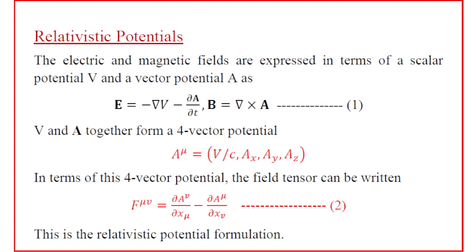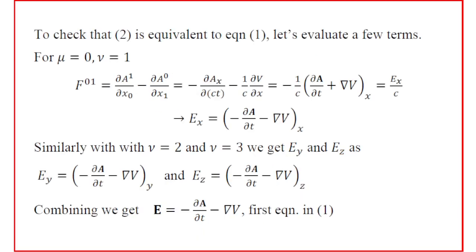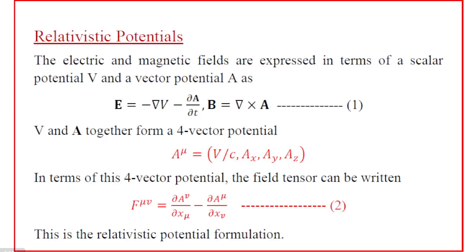The equation can be written as equation 2, the relativistic potential formulation: F^μν = ∂A^ν/∂x^μ − ∂A^μ/∂x^ν. To verify that equation 2 is equivalent to equation 1, we evaluate a few terms explicitly. First, take μ = 0, ν = 1, giving F01.